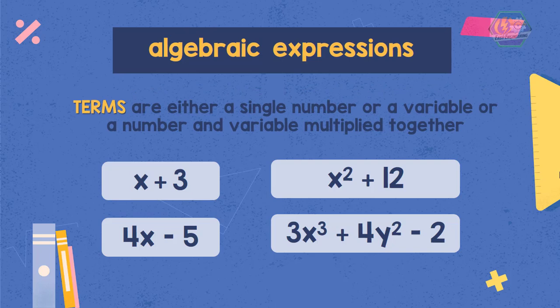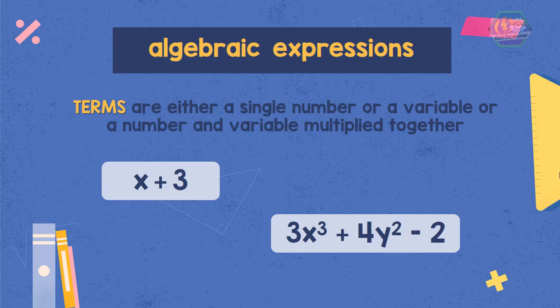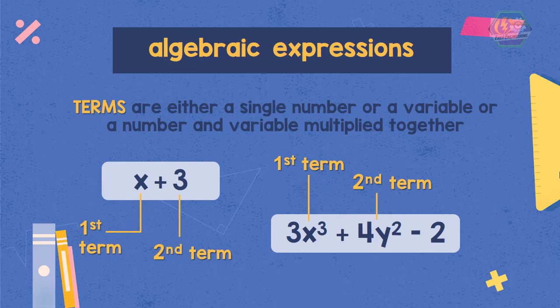In algebra, terms are either a single number or a variable, or a number and variable multiplied together. In the algebraic expression x plus 3, x is a term and 3 also is a term. Therefore, we have two terms. While in the algebraic expression 3x cubed plus 4y squared minus 2, it has three terms: the 3x cubed, 4y squared, and 2.